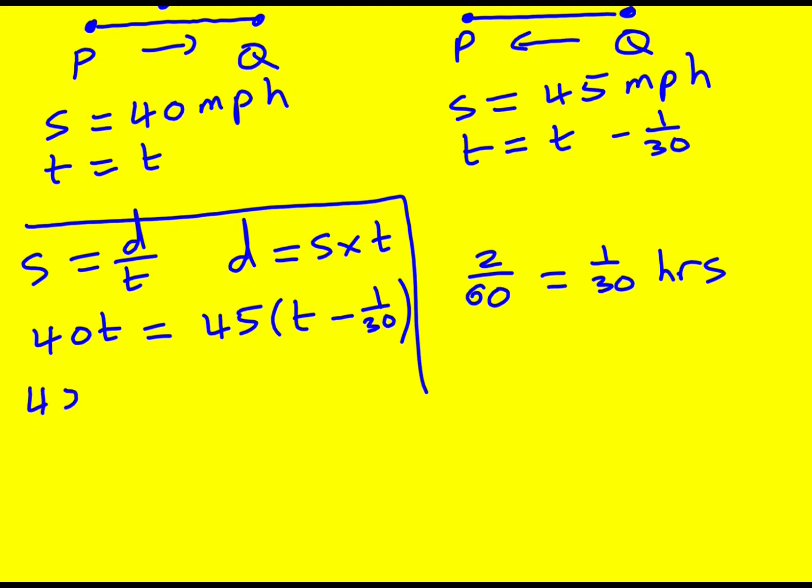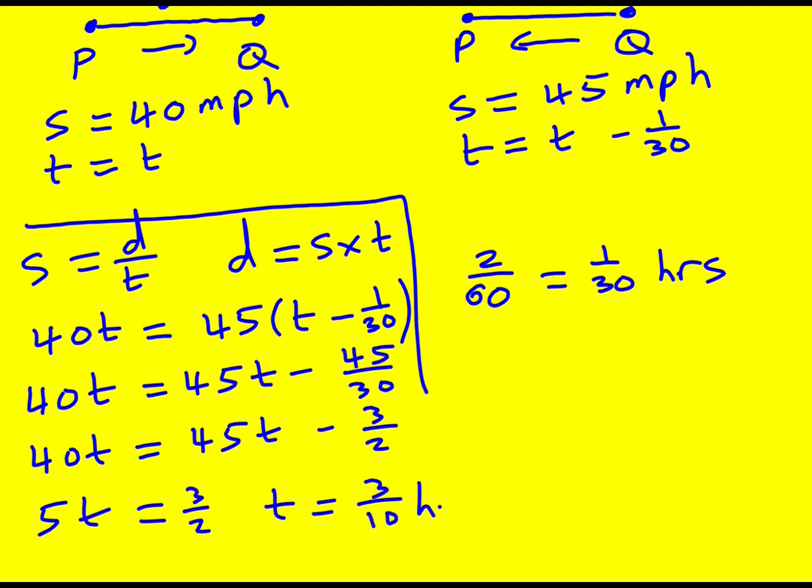So 40T is going to equal 45T minus 45 over 30. I can cancel that down, divide top and bottom by 15 to give me 3 over 2. With a bit of rearranging, if I minus 40T from both sides and then add 3 over 2, I'm going to get 5T equals 3 over 2. Therefore T is going to be 3 over 2 divided by 5, that's going to be 3 over 10 hours.